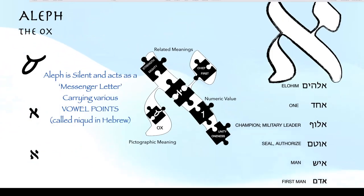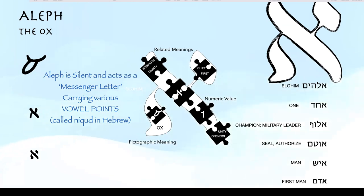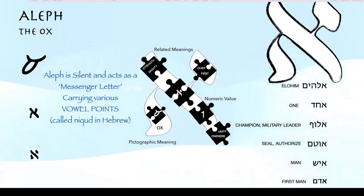The first letter we're going to talk about is the Aleph. The pictographic meaning is the ox. In the Paleo Hebrew, that's really clear — it's an ox head. In the Aramaic square script it's a little less clear, but you can still see the horns and the overall idea. The Aleph is silent, but it acts as a messenger letter carrying vowels, carrying those Nikud or Nikudot. By looking at the Nikudot that are on it — every once in a while Aleph will function as a consonant, but by and large it functions as a carrier for these different vowels.